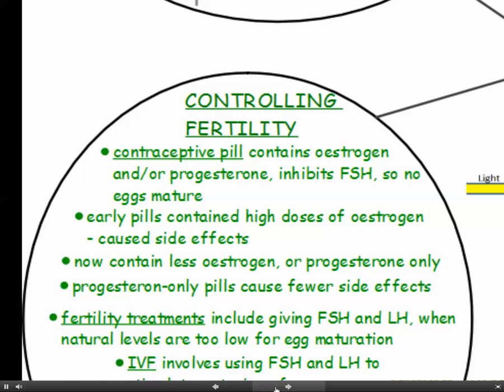Controlling fertility: the contraceptive pill contains oestrogen, and sometimes progesterone as well, or sometimes progesterone on its own. The job of the contraceptive pill is to inhibit FSH so that no eggs mature. In the early days, pills contained high doses of oestrogen which caused side effects. Nowadays, the modern pill contains less oestrogen, or it's progesterone only, and the progesterone-only pills cause fewer side effects.